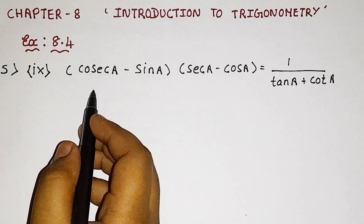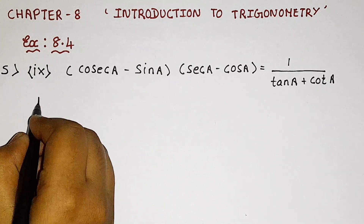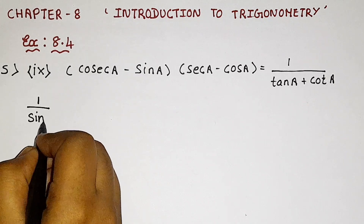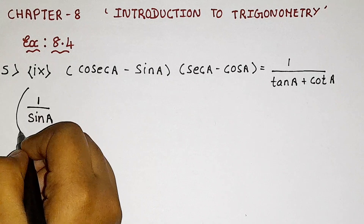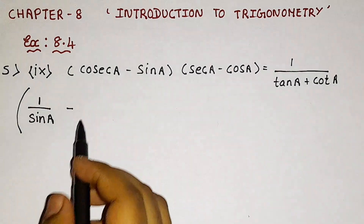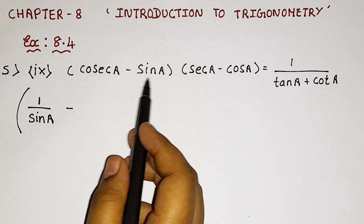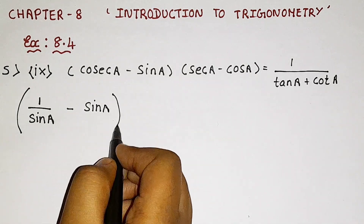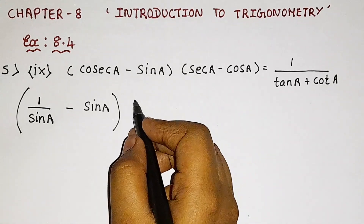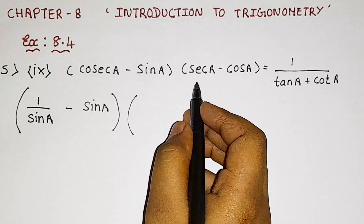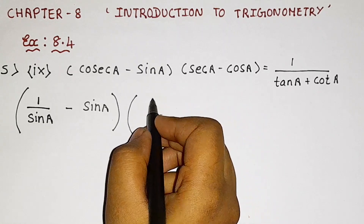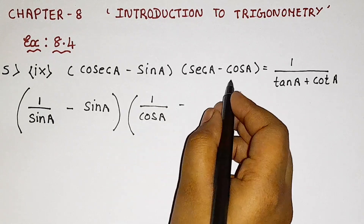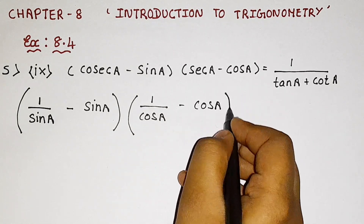So how do we solve it? Since we have cosecant A, we have the formula that cosecant A is equal to 1 by sin A. The bracket is also important, and then minus sin A as it is. And then we have the next bracket with secant A, and secant A has the formula 1 by cos A, and then minus cos A as it is. Close the bracket.